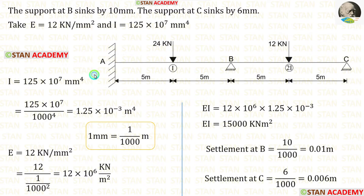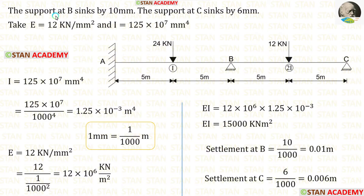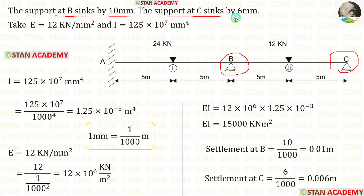At point A, there is a fixed support. At points B and C, there are hinged supports. The support at point B sinks by 10 mm, and the support at point C sinks by 6 mm.